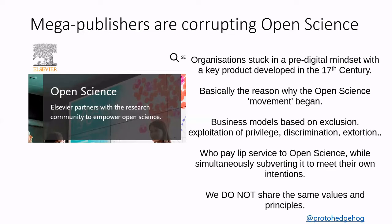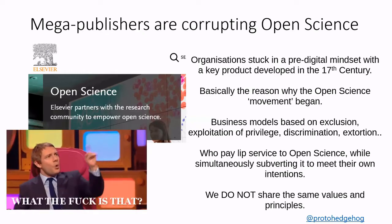There was an uprising against their business models, which were often leading to things like bias and exclusivity, exploitation of privilege, and most definitely putting private profits over the fact that knowledge was supposed to be a public good. And what's happened now is that if you look at Elsevier's website, they say things like 'Elsevier partners with the research community to empower open science.' They are paying lip service to open science while simultaneously subverting it to meet their own goals. And it's disgusting.